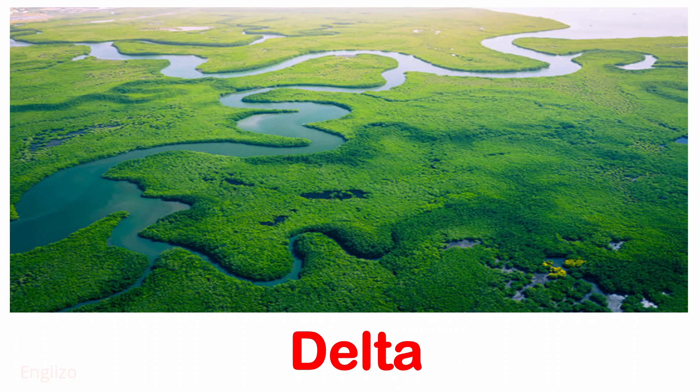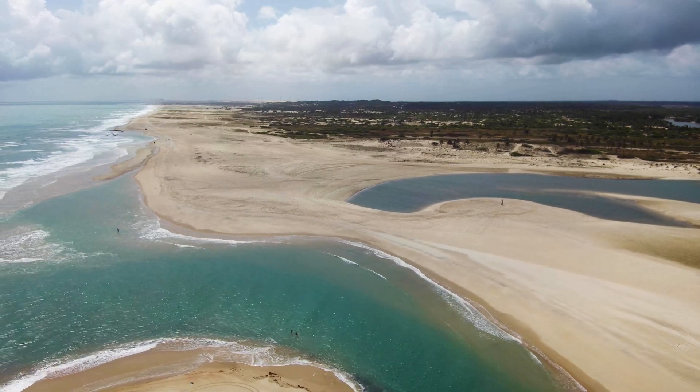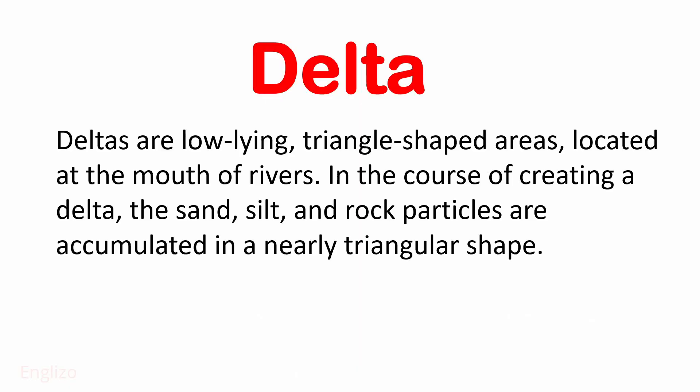Delta: Deltas are low-lying, triangle-shaped areas located at the mouth of rivers. In the course of creating a delta, the sand, silt, and rock particles are accumulated in a nearly triangular shape.